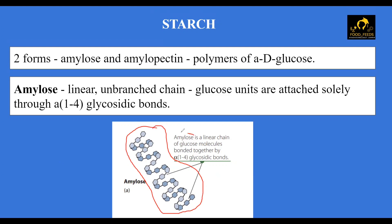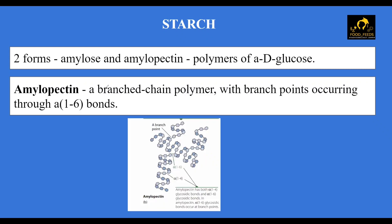Please remember that amylose always has a linear chain. Amylopectin, the second form, has a branched chain. Though it contains the same basic glucose units, the difference lies in the structure it forms.